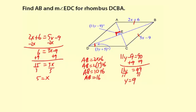Now I can use this value, y equals 9, to figure out the measure of angle EDC. The measure of angle EDC equals 3y plus 5, which is 3 times 9 plus 5. That's 3 times 9 is 27 plus 5. And 27 plus 5 is 32.